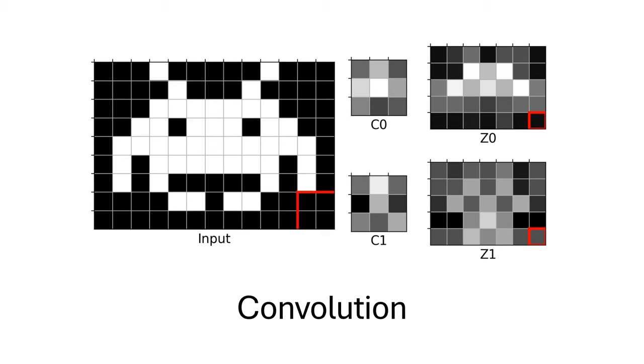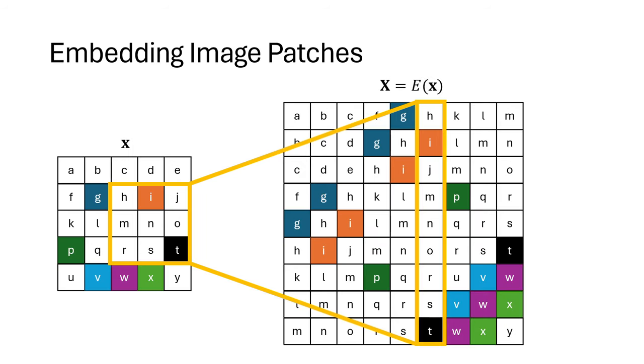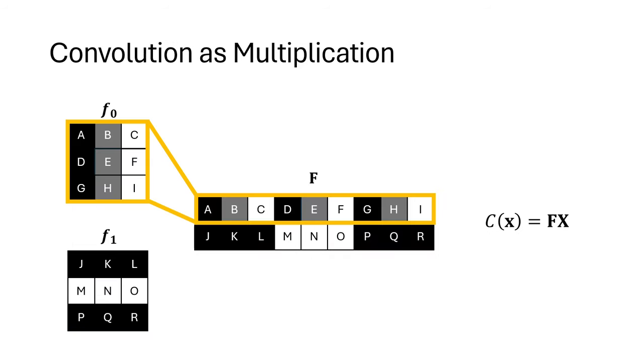However, it is not immediately obvious how to turn convolution into linear algebra so that we can use it as part of a neural net. The fundamental idea on how to do this is to embed patches, as you see here. Each 3 by 3 patch in the input image X becomes a column in a larger matrix capital X, as you can see here. Then, we take our 3 by 3 filter kernels and embed them as rows in a matrix F, as seen here. Once we've done this, convolution becomes a matrix multiplication.